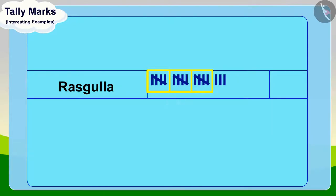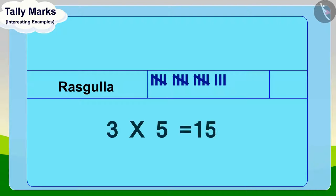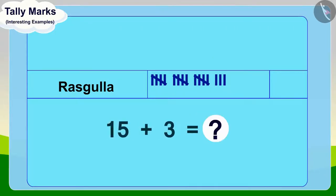How many Rasgullahs does that mean it is equal to? Yes, three times five is fifteen. Now, we will count the remaining tally marks. How many tally marks are left here? Three. If we add these three remaining tally marks to fifteen, then what is the total? Eighteen. Appu sold a total of eighteen Rasgullahs.